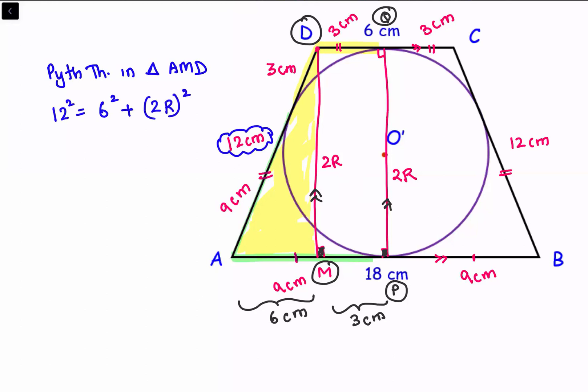Dividing both sides by 2 square, this will be 6 square equals 3 square plus R square. So R square is 6 square minus 3 square. This is 36 minus 9 which is 27.